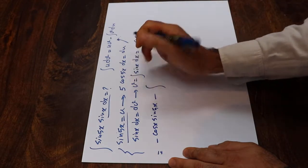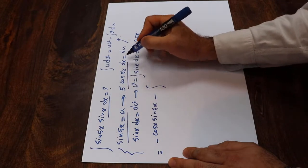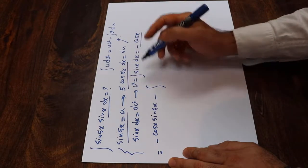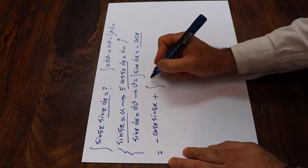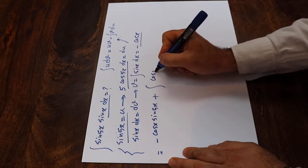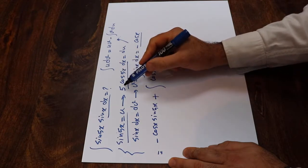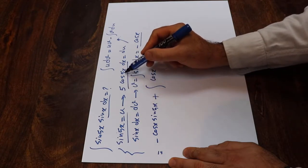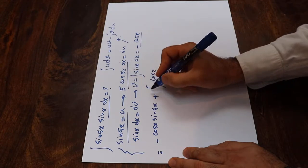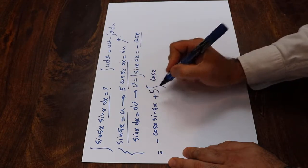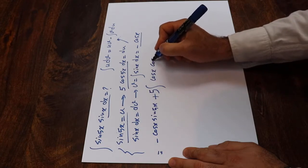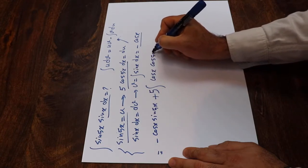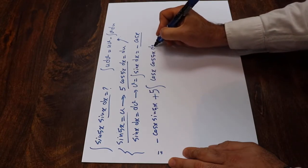v is this, du is this one. Minus times minus is plus: v, that is cosine x, times 5 cosine 5x. So 5 is a constant — I take it out of the integral — giving 5 times the integral of cosine x cosine 5x dx.